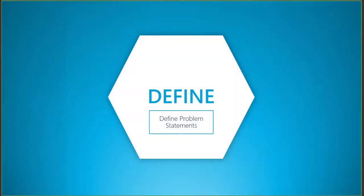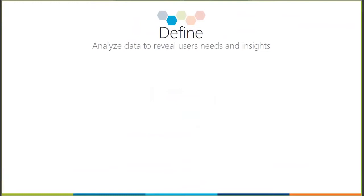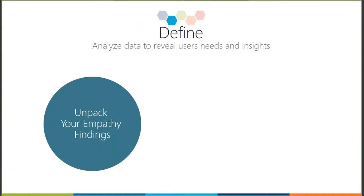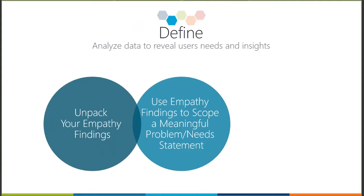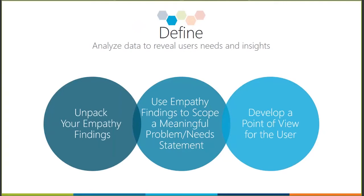With that, let's talk about the define phase, where we define the problem statements. In the define phase we're looking to analyze the data that we've just uncovered through our empathy research to help reveal the user's needs and insights. There are three activities that happen: one, we unpack our empathy findings; two, we use our empathy findings to help scope a meaningful problem or needs statement; and three, we help to develop a point of view for the user based on what we've learned about them.